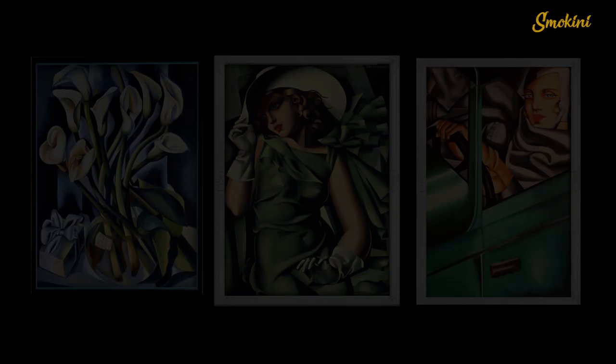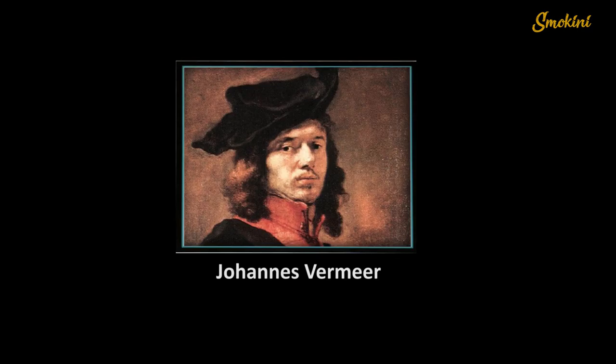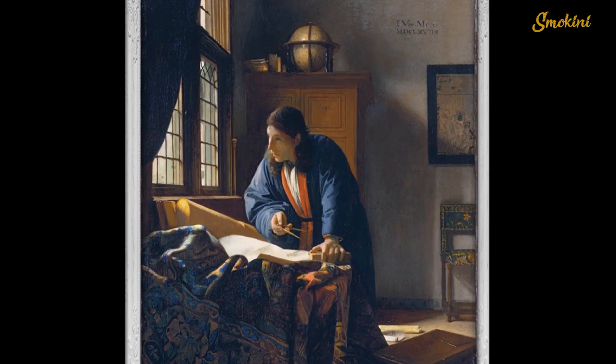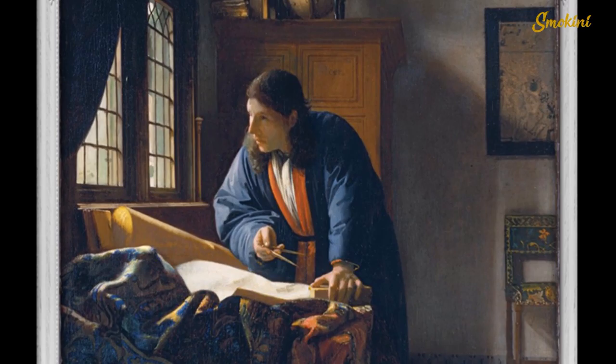Tamara de Lempicka is also a fan of front lighting. Here, curves, clothes, flowers, figures, buildings — they all look like sculptures, powerful forms with their own integrity. Side lighting — light from the side — is one of Johannes Vermeer's favorite instruments. He places all important objects close to a natural light source. Shadows make forms more realistic and three-dimensional.